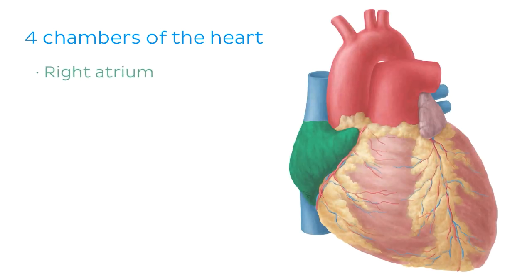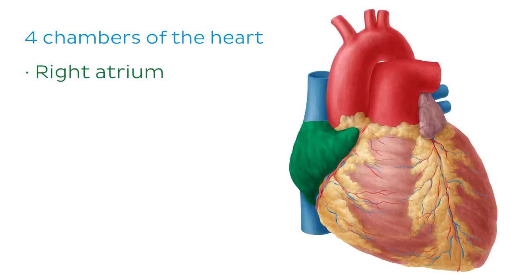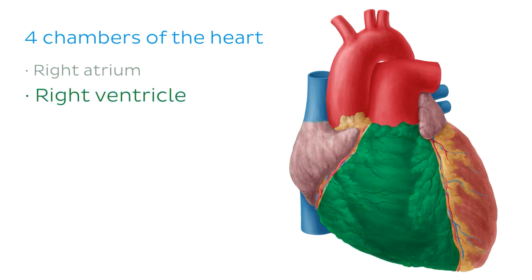We'll now go through the four chambers of the heart in the same way blood travels, from entering the heart as deoxygenated blood to leaving the heart as oxygenated blood to supply the body. The first chamber blood enters is the right atrium. In this image we're again looking at the anterior aspect of the heart, and the right atrium is highlighted in green. The right atrium receives deoxygenated blood from the venous system, and when the right atrium contracts the blood moves into the second chamber, the right ventricle, which is the structure we can now see highlighted in green.